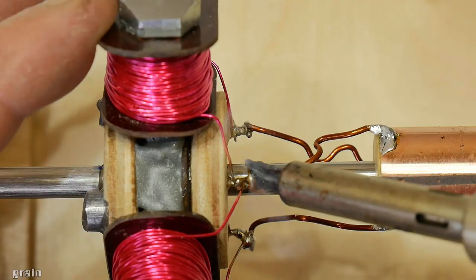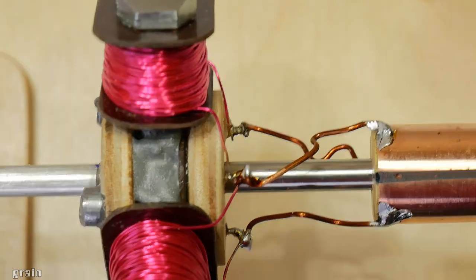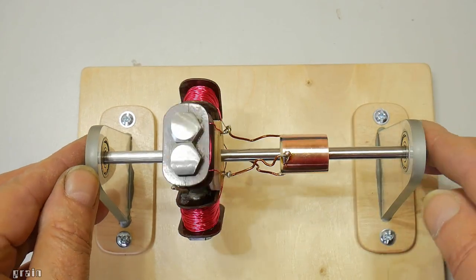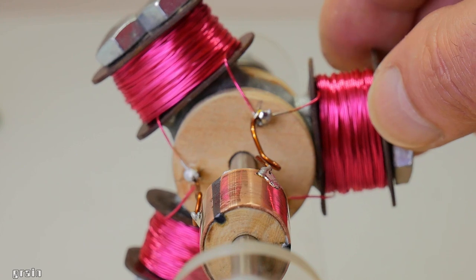Now you need to put the rotor and the collector on the axle and connect the coils to the collector contacts. In my version, the collector contacts are located between the coils.